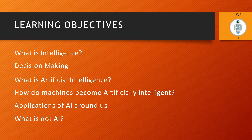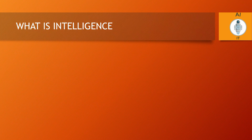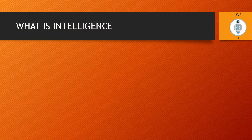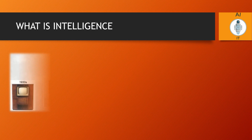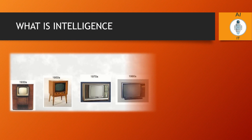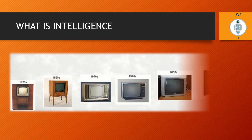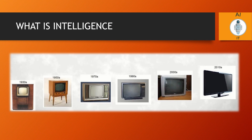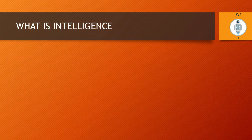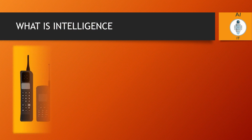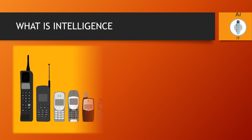Life without machines has become very difficult. Machines have become more sophisticated and smart. For example, the television screens from the last century to now have shown improvement in resolution and their projection techniques. Similarly, a smartphone can do much more than just calling up people.